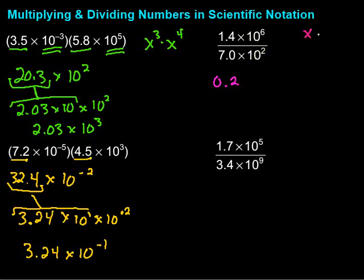Something like this: if we had x to the third over x, this would be x times x times x on top and x on the bottom. I could cancel one out, so I would end up with x squared. I'm subtracting those exponents. So 10 to the sixth and 10 squared, subtract the exponents, I end up with times 10 to the fourth.